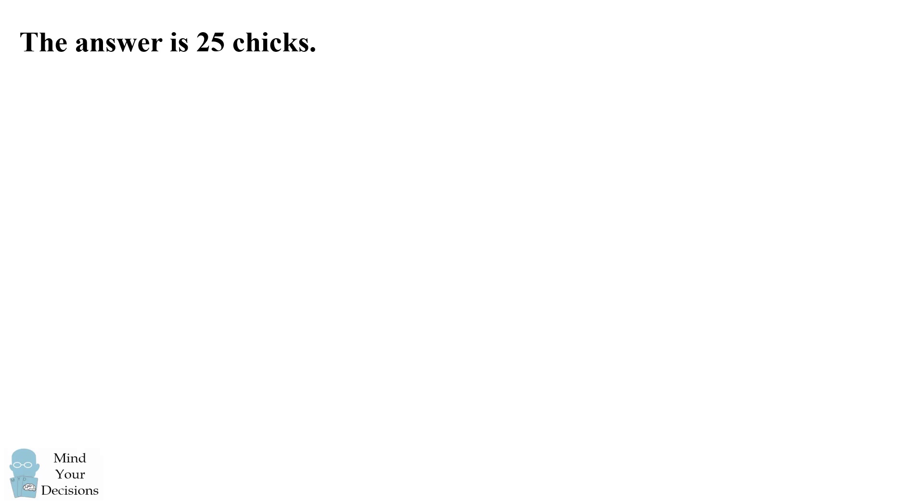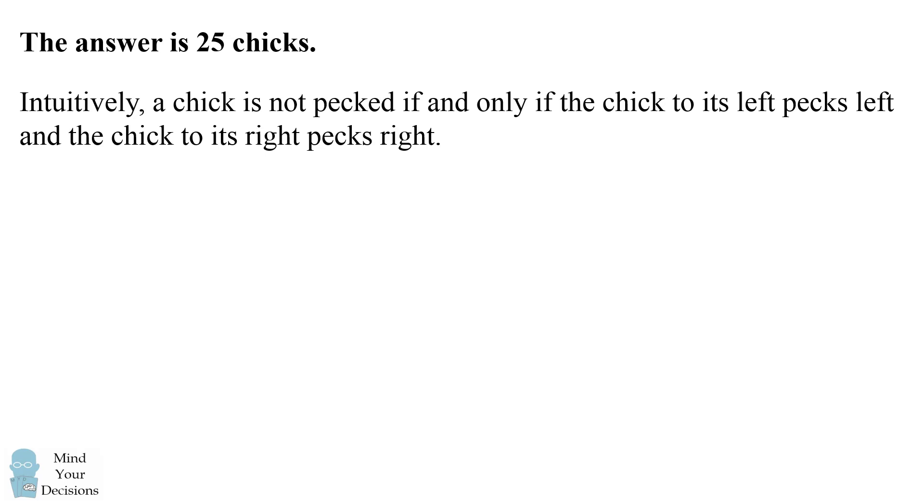The answer is 25 chicks. Intuitively, a chick is not pecked if and only if the chick to its left pecks left and the chick to its right pecks right.